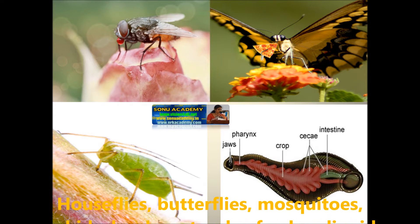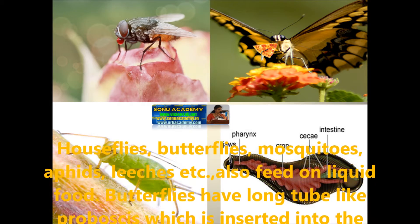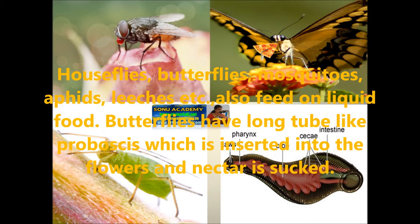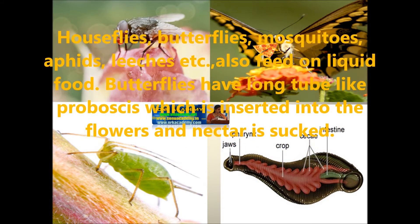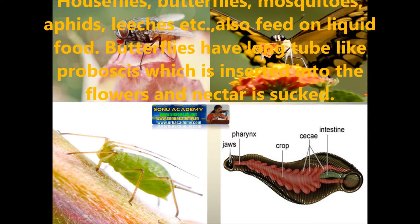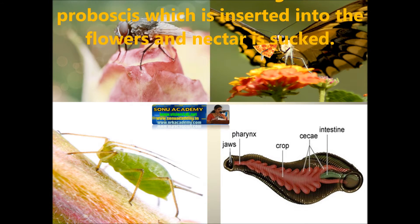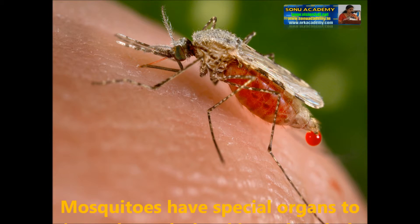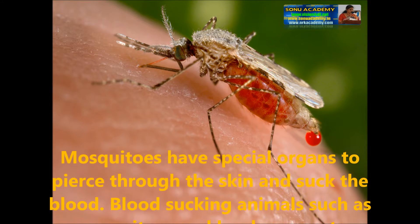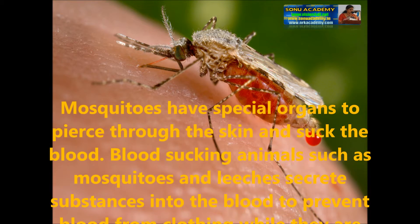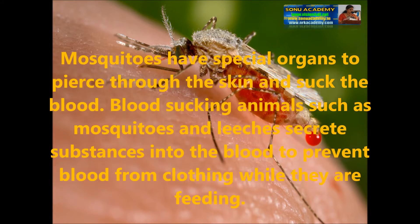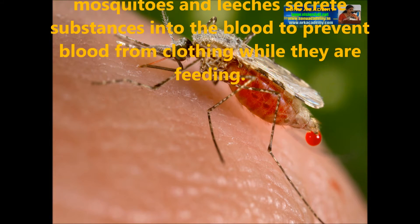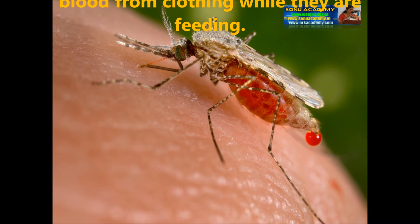Some insects such as house flies, butterflies, mosquitoes, and leeches also feed on liquid food. Butterflies have a long tube-like proboscis which is inserted into flowers and nectar is sucked. Mosquitoes have a special organ to pierce through the skin and suck blood. Blood-sucking animals such as mosquitoes and leeches secrete a substance into the blood to prevent it from clotting while they are feeding.